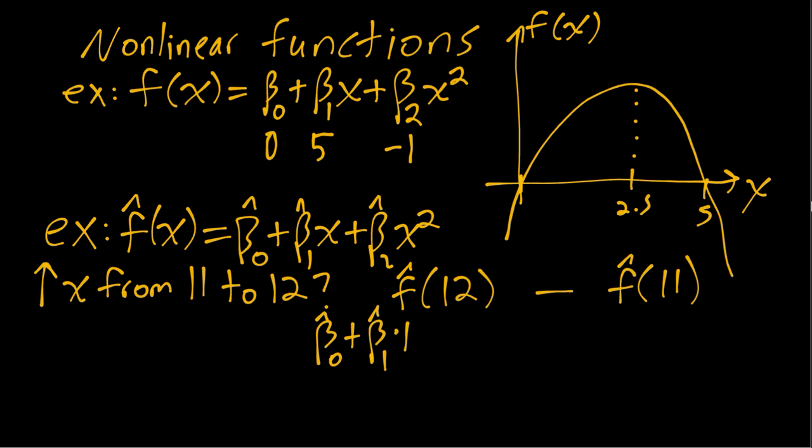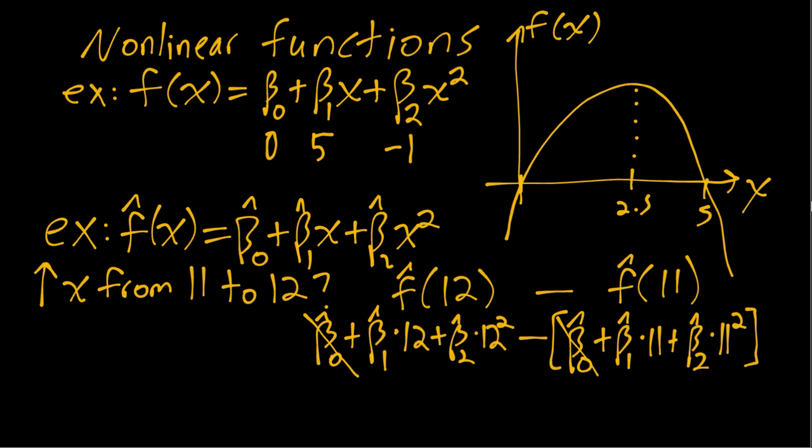I'll plug in 12 first and then plug in the same but with x equals 11. We can see these intercept terms will cancel out to zero, and then if we group the beta hat 1 terms, we'll have beta hat 1 times 12 minus beta hat 1 times 11.